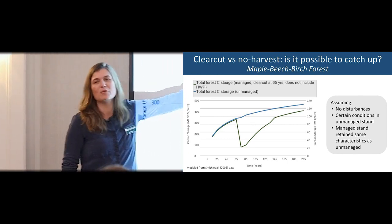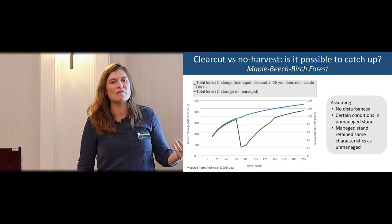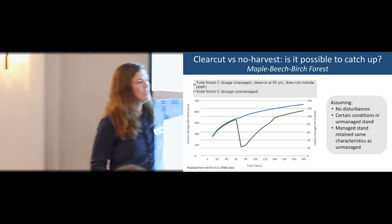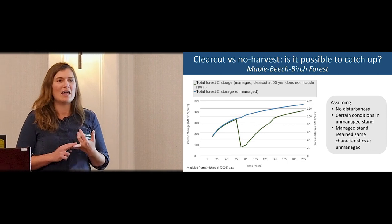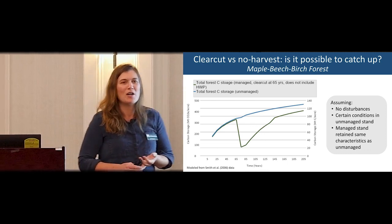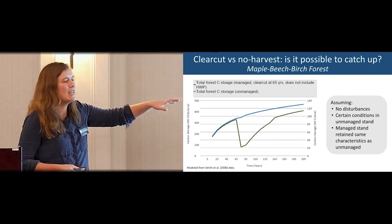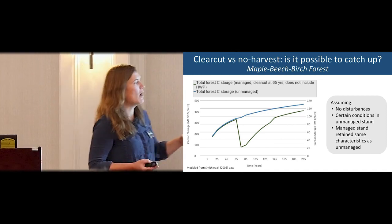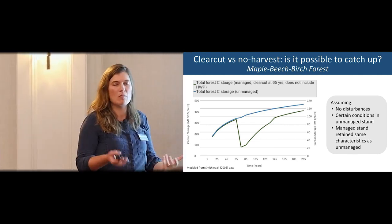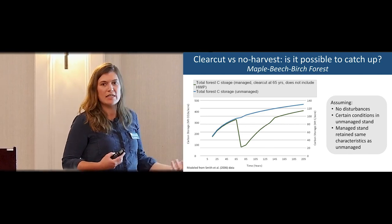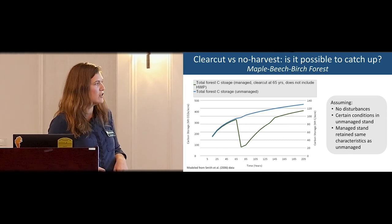This assumes no disturbances in the unharvested stand, with that stand on a trajectory of increasing carbon over time. But what if it's unhealthy? What if it experiences emerald ash borer? What if it's a monoculture beech stand? There are many examples where the harvest scenario could easily enhance its resistance, resilience, and composition relative to the unmanaged stand.